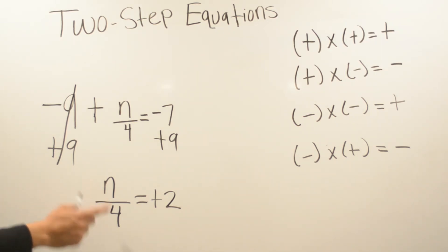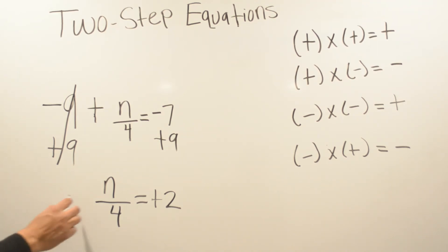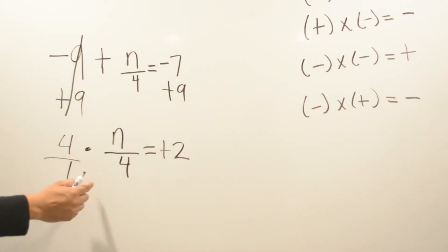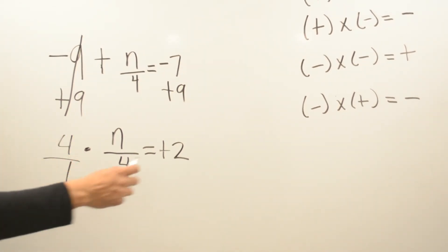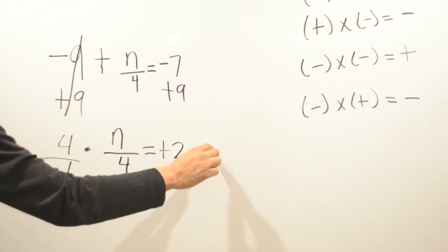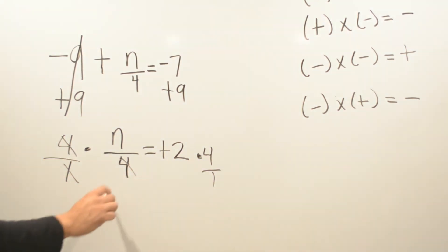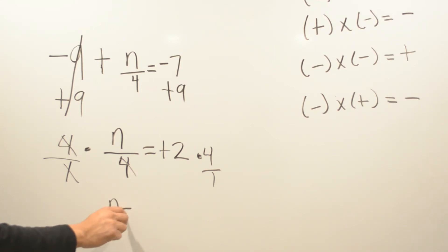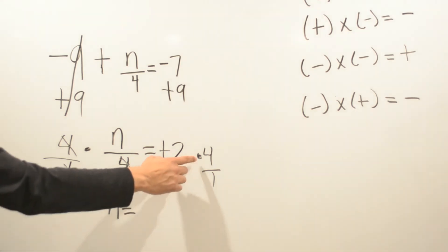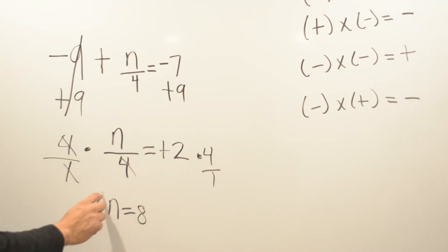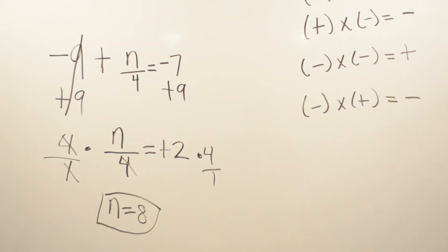Now we go back — we have division. The opposite of division is multiplication, so we're going to multiply by four over one. Whatever we do on one side, we can't forget to do it on the other side as well. We cancel this out, and four times two is going to be 8. So your variable n equals 8.